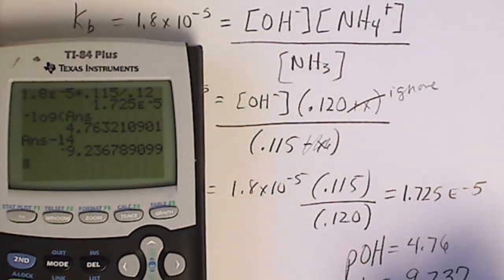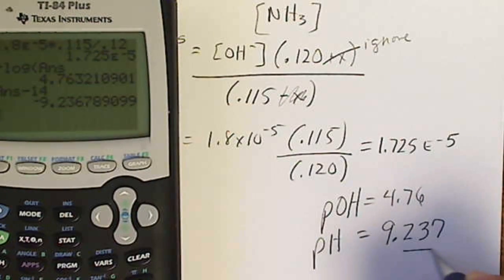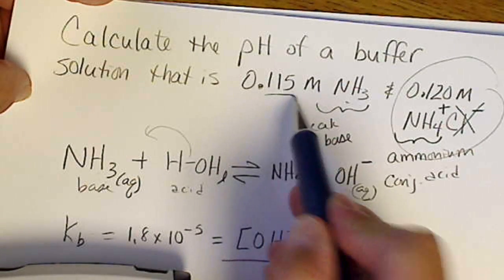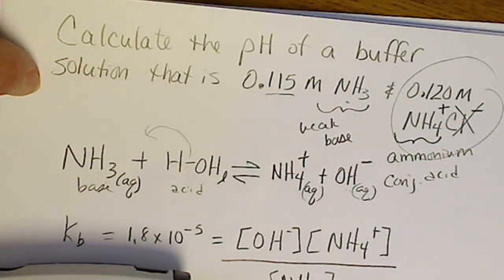Significant figure-wise, 3 decimal places would be here because our concentration, that's 3 significant figures.